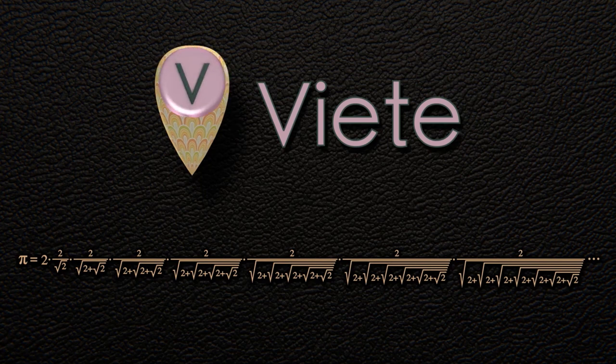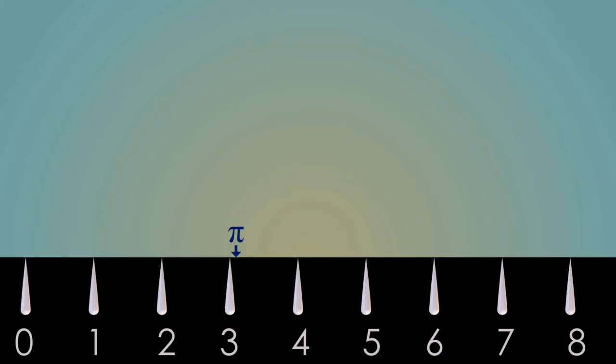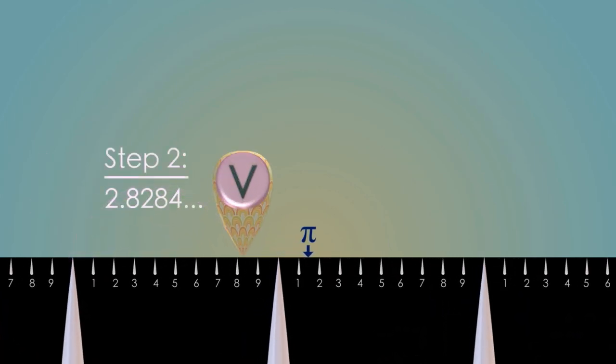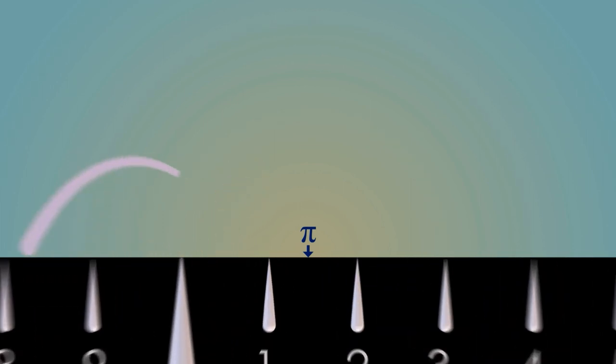This is a particularly rapid way of calculating the digits of pi. We start with 2. When we multiply by 2 over the square root of 2, that takes us up to 2.8284. This one's kind of interesting because, instead of jumping back and forth, it's actually sort of sneaking up on pi from the left.